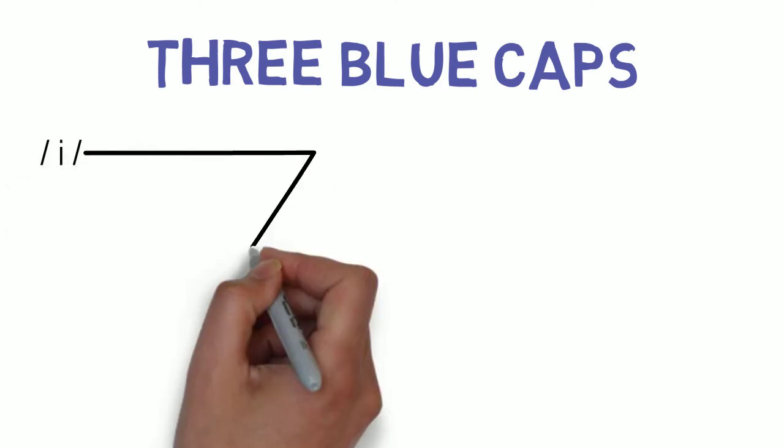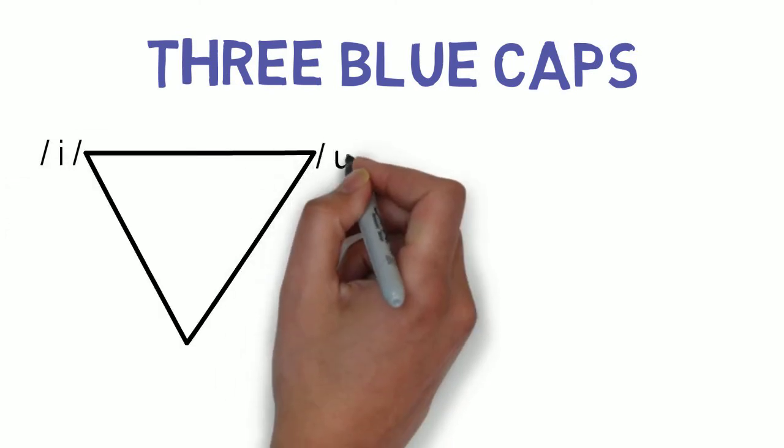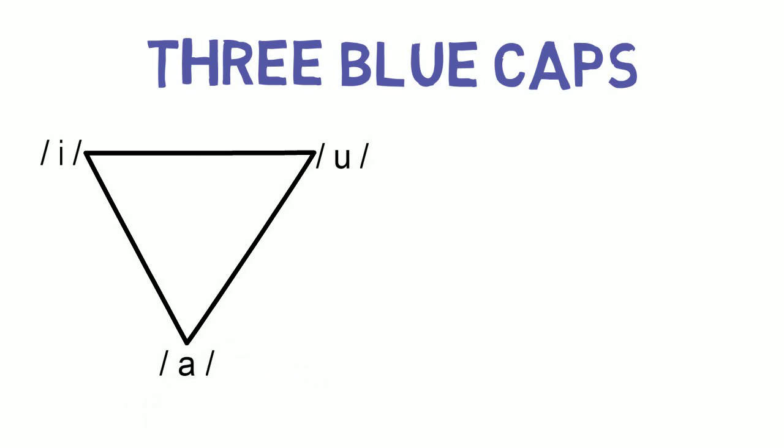A large vowel space would enunciate vowels, with the tongue far apart for each of them. For example, three blue caps.